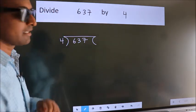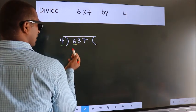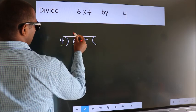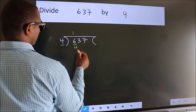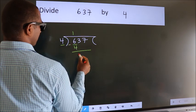Next, here we have 6, here 4. A number close to 6 in the 4 table is 4 once 4. Now we should subtract. We get 2.